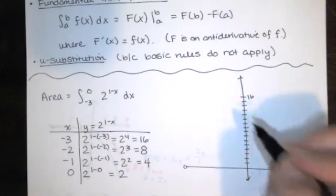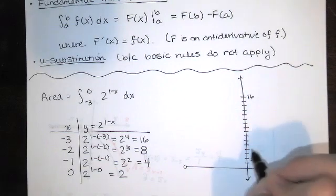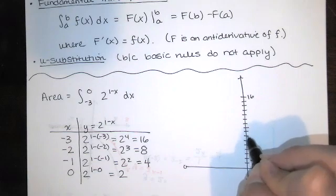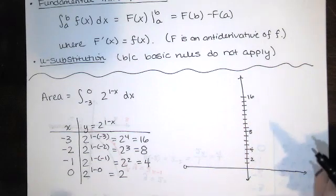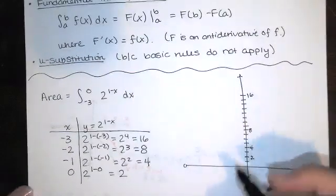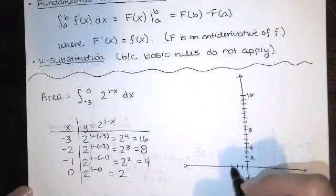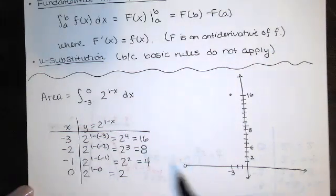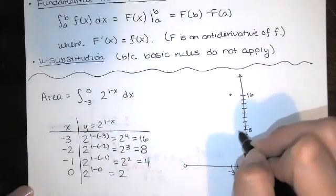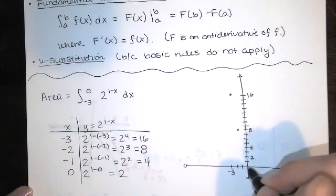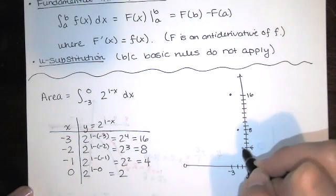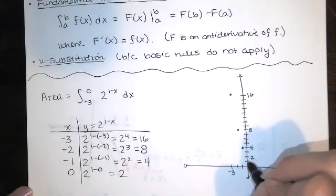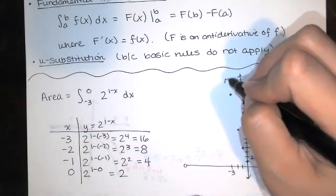So that's 16. There's one, two, three, four, five, six, seven, eight. Okay. And when x=-3, y=16. And when x=-2, y=8. And when x=-1, y=4. And when x=0, y=2. So this is our exponential function.